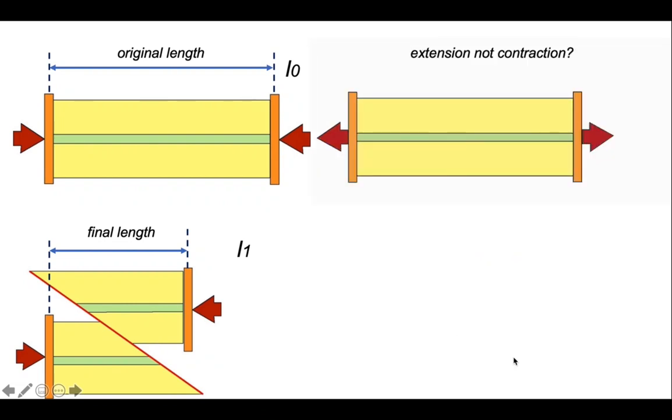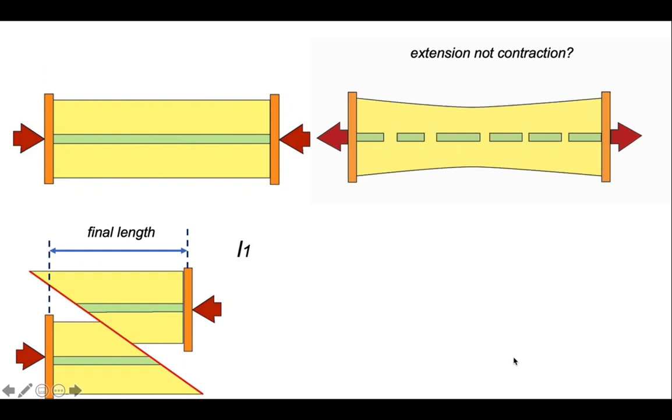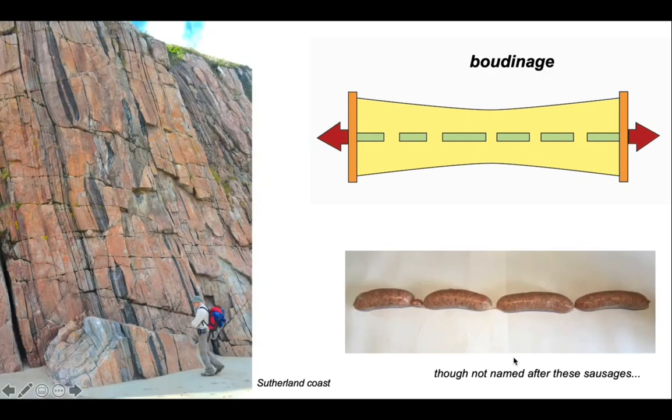Let's have a brief aside and look at what happens if our model is pulled apart, not squashed together. So we're dealing with extension, not contraction. The green layer is going to be pulled apart like this. This type of deformation is called boudinage, named after the French for a type of sausage.